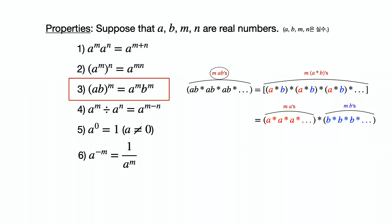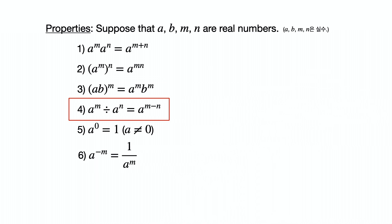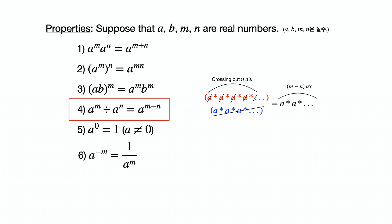Property 4: a to the m power divided by a to the n power is equal to a to the m minus n power. From m multiples of a, you erase n a's, and only m minus n multiples of a remain.